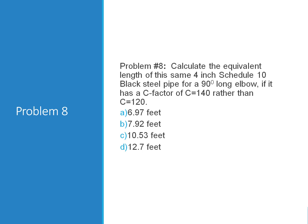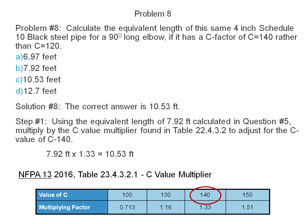Problem 8. Calculate the equivalent length of the same 4 inch Schedule 10 black steel pipe for a 90 degree long turn elbow if it has a C factor of 140 rather than 120.